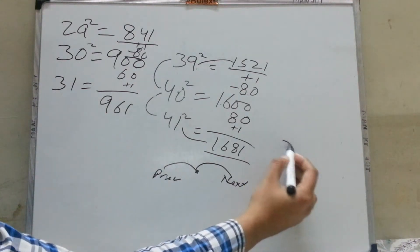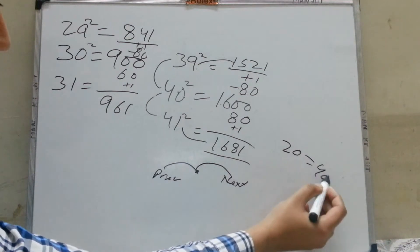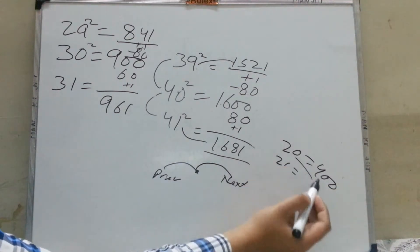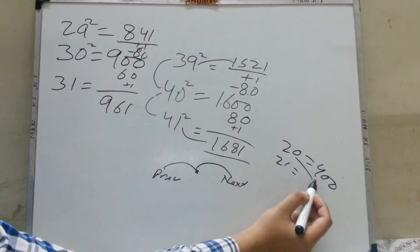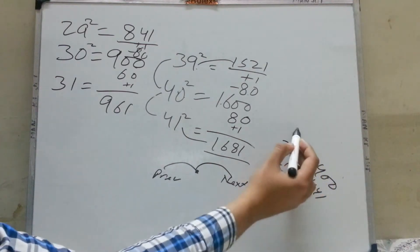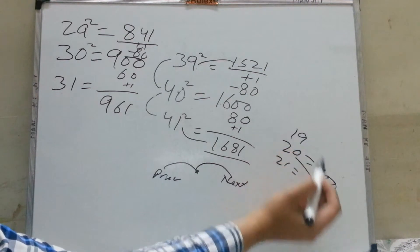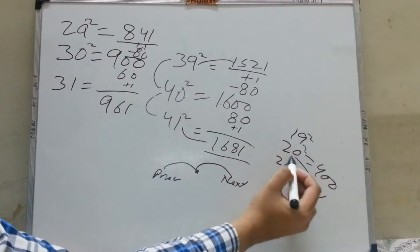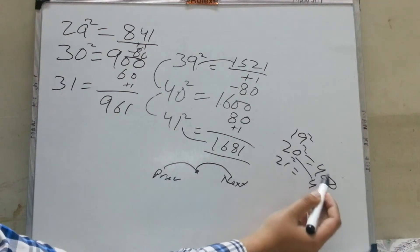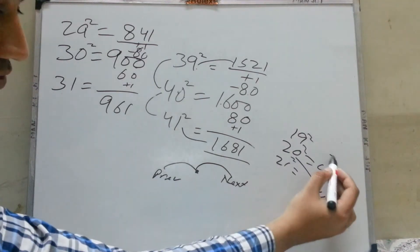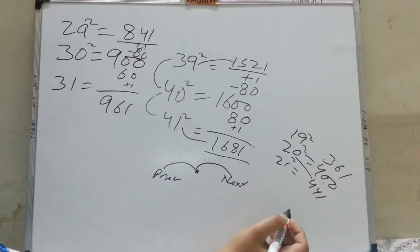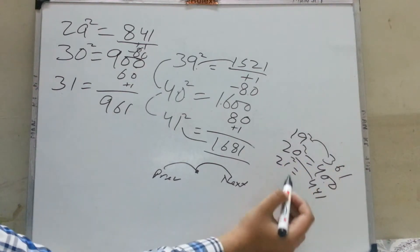The square of 20 is 400. The square of 21 is: add 20 twice, means 40. So 440 plus 1 — answer is 441. The square of 19 will be 400 minus 2 times 20, means 400 minus 40. Answer is 360, but plus 1 — so 19 squared is 361.